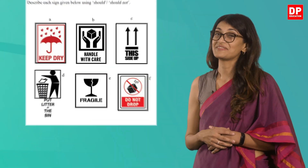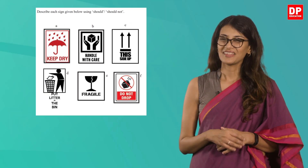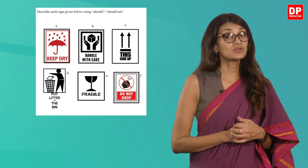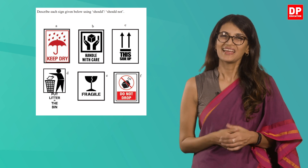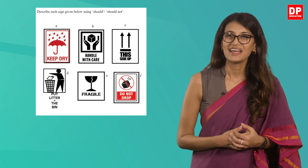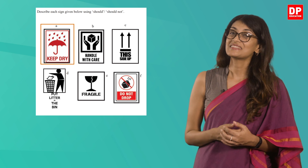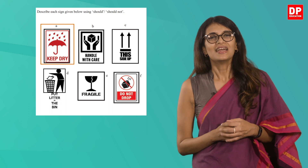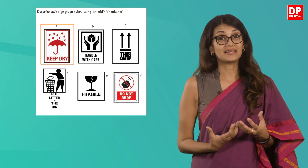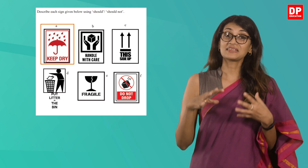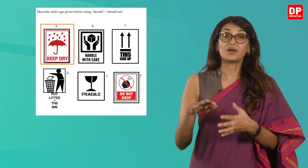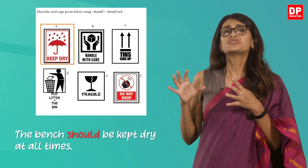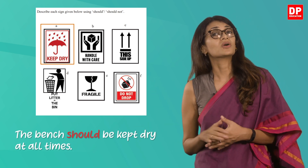Look at activity 10 on page 20. You are presented with six signs and asked to describe them using should or shouldn't. Let's do it together. The first sign is of an umbrella protecting the ground beneath from the rain — a sign used to explain that people must keep the area or item dry. So you can say: the bench should be kept dry at all times.